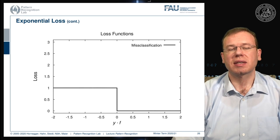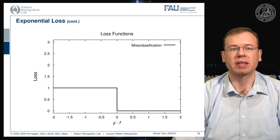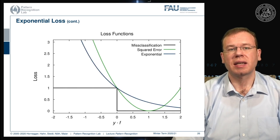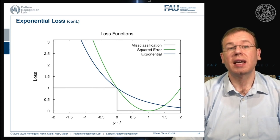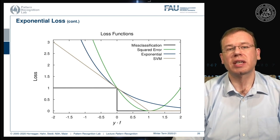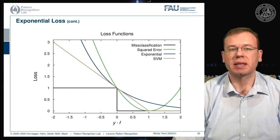Looking at the losses we want to minimize: the misclassification loss is hard to minimize because it is not a convex problem. The squared error is a first approximation of the misclassification loss. A better approximation is given by the exponential function — the exponential loss produced by AdaBoost. If we take a support vector machine, we end up with a loss related to the hinge loss, and we see that the SVM also solves a convex optimization problem corresponding to a different approximation of the misclassification loss.